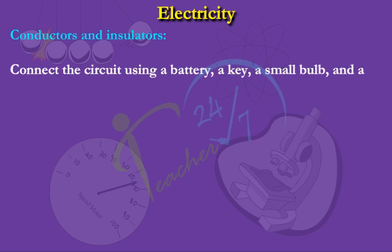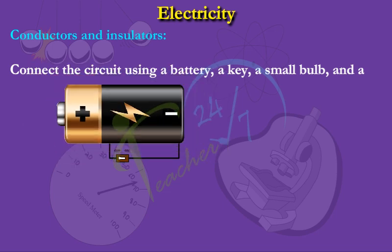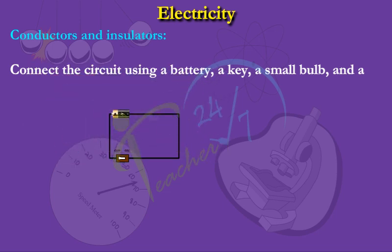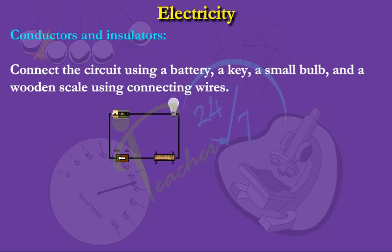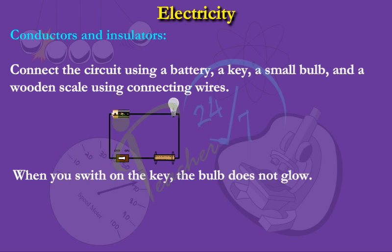Connect the circuit using a battery, a key, a small bulb and a wooden scale using connecting wires. When you switch on the key, the bulb doesn't glow.